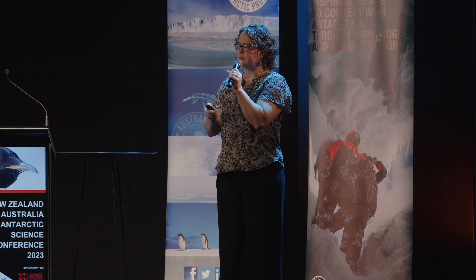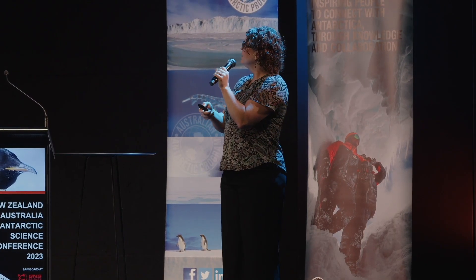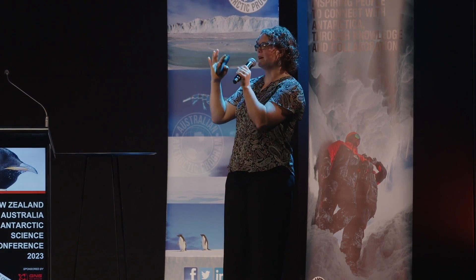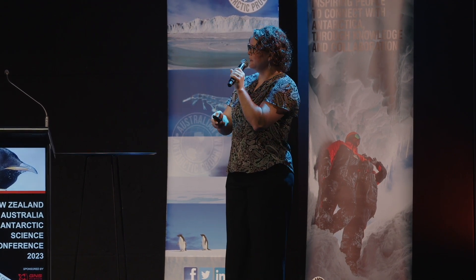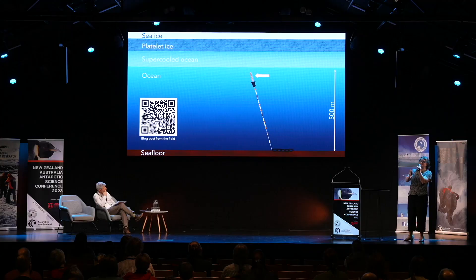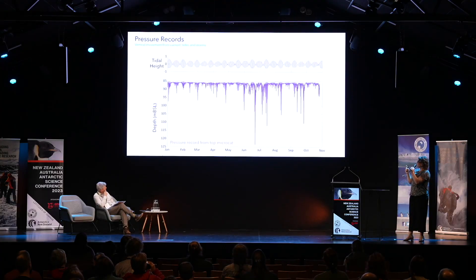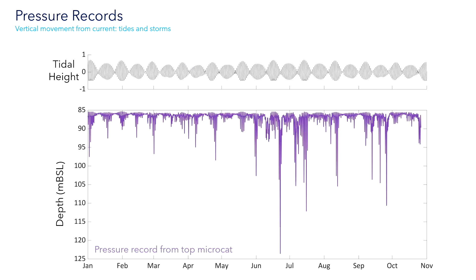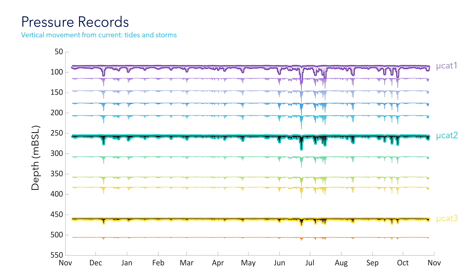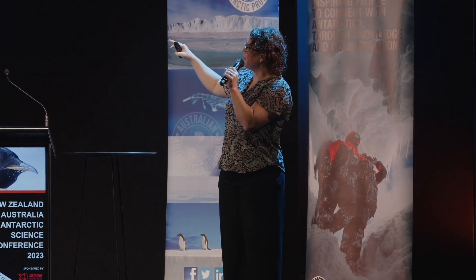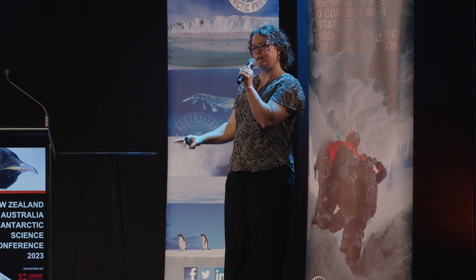With a seafloor-mounted array, even with quite a lot of flotation, it's subject to ocean currents. If we expect a tidal current in one direction, we might get blowdown of the whole array, and conversely when tides reverse it goes the other direction. Looking at the pressure record from the topmost instrument, the tidal movement accounts for around three or four metres of height change. But throughout the year we also have events with as much as 40 metres of blowdown of that top instrument. Plotting all the pressure records, we can see the same thing through all of them, reduced as we go down towards the seafloor — exactly what we'd expect.